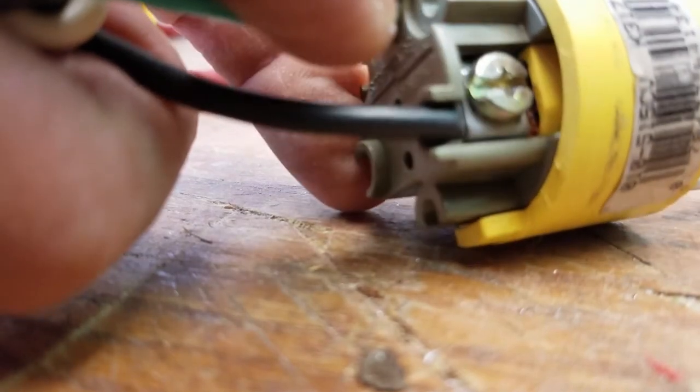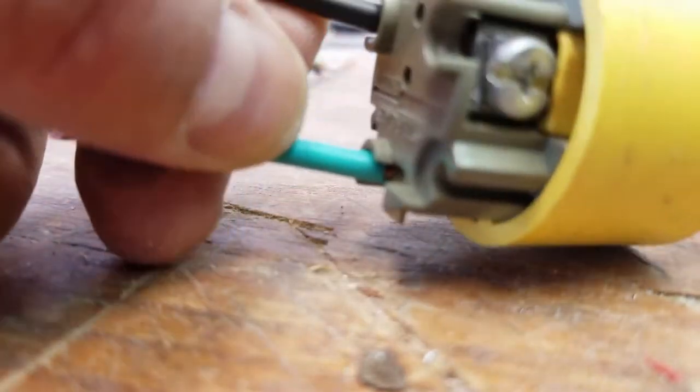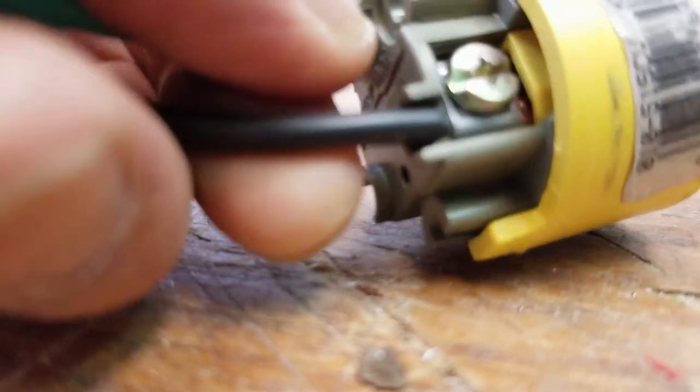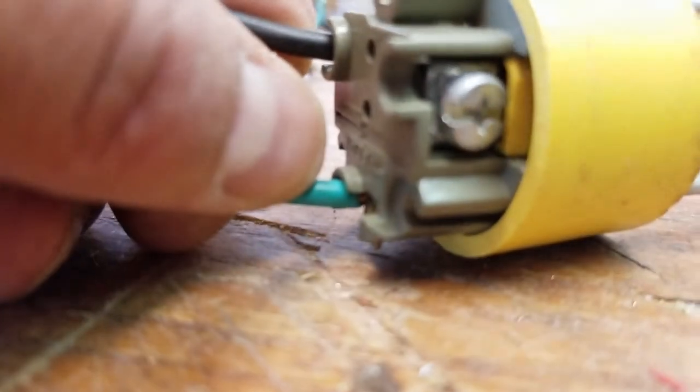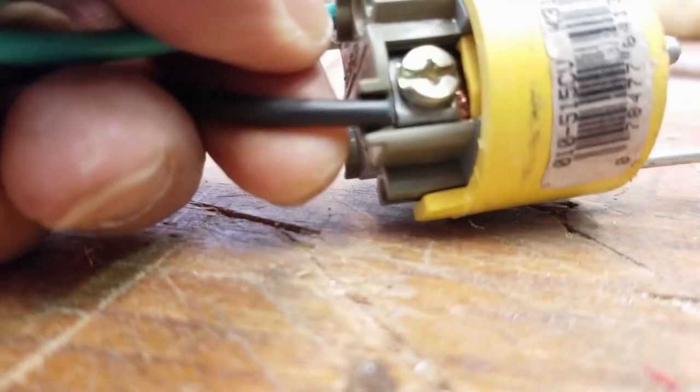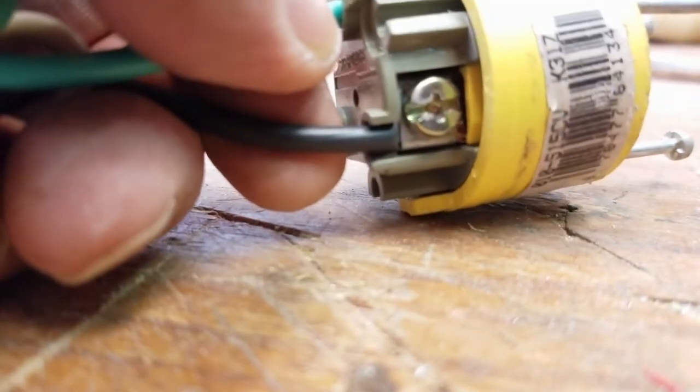Also in North America, brass colored connectors are hot, see how it's a little yellowed compared to the white which is neutral. Neutral and hot.